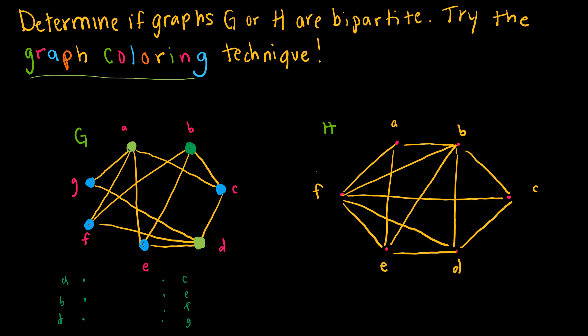Let's try the same for graph H. Color A green, which means anything connected to A can't be green, so B, E, and F are colored blue. But F is connected to both E and B — blue connected to blue — which is not allowed. So this graph is not bipartite because the graph coloring doesn't work.